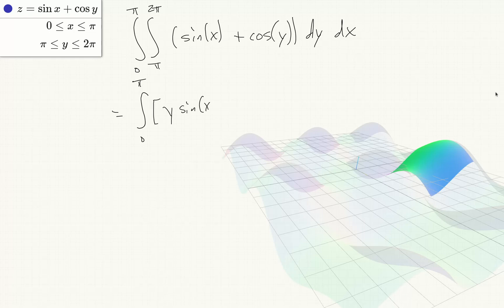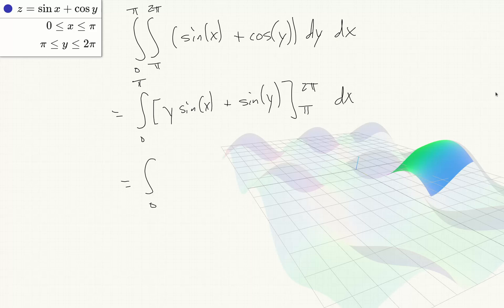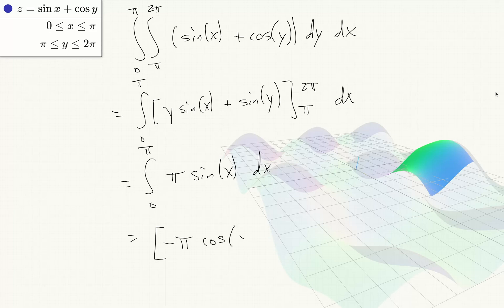Sine of x plus cos of y dy dx. So this will be integral 0 to π of y sin x plus sin of y, evaluated at 2π and at π, then integrated with respect to dx. That gives π sine of x. Since sine of 2π and π is 0, we just integrate π sin x dx. That is negative π cos x evaluated at π and at 0. Cos π is negative 1, so we again get 2π.